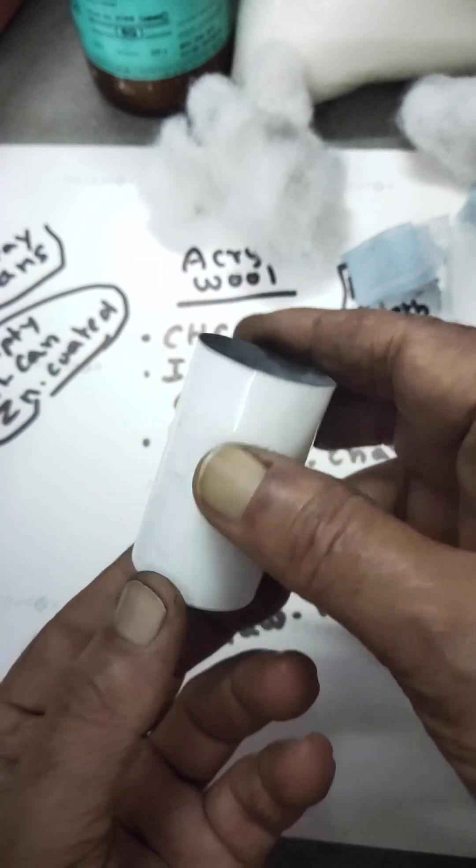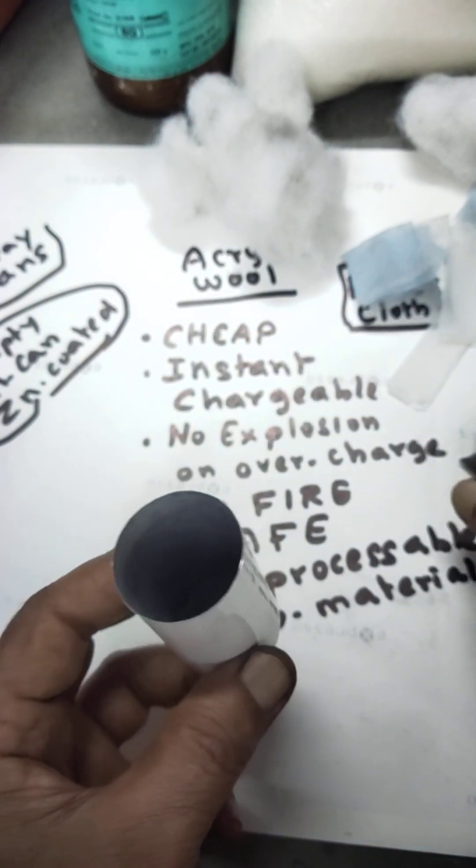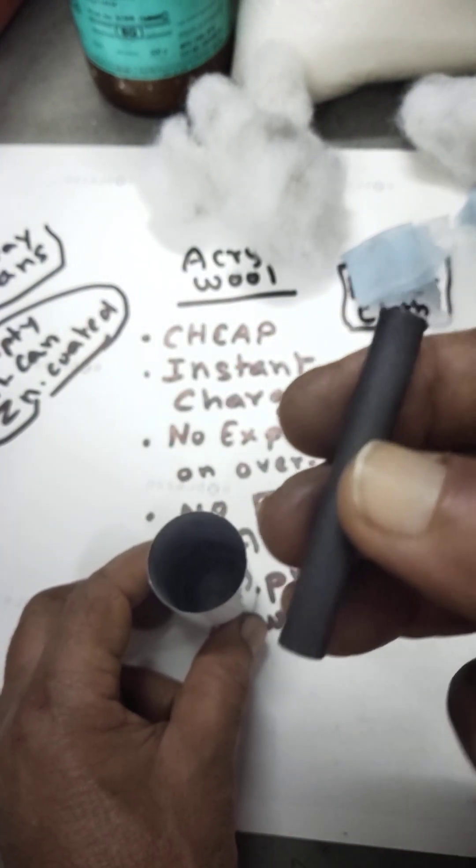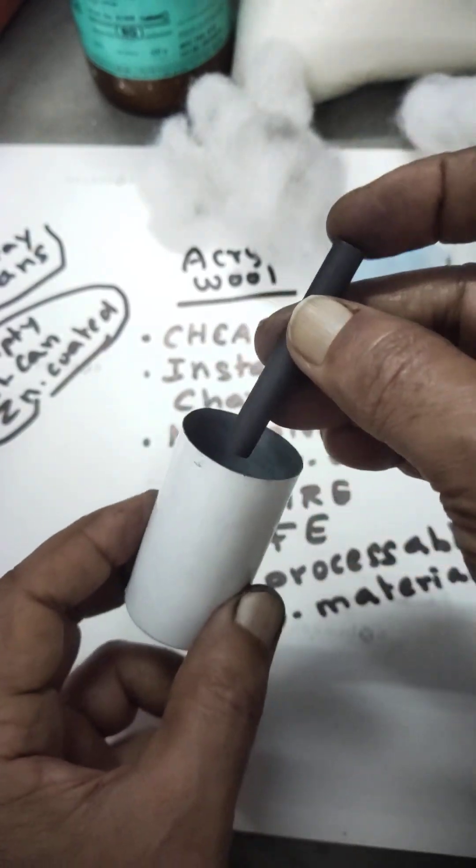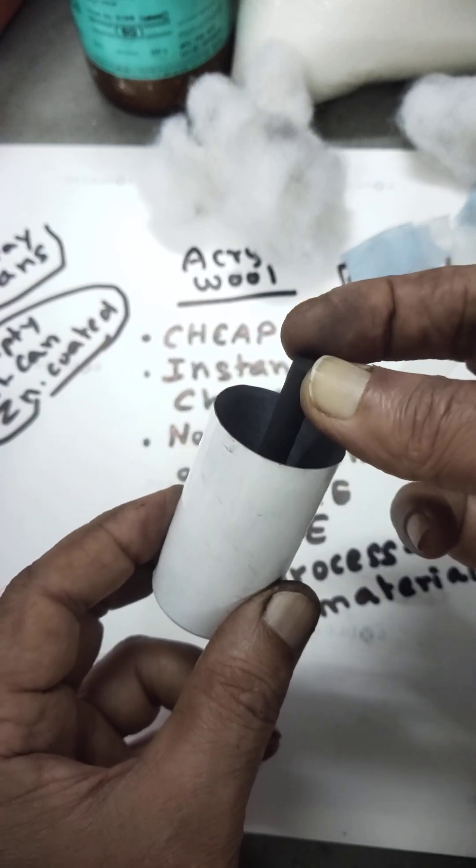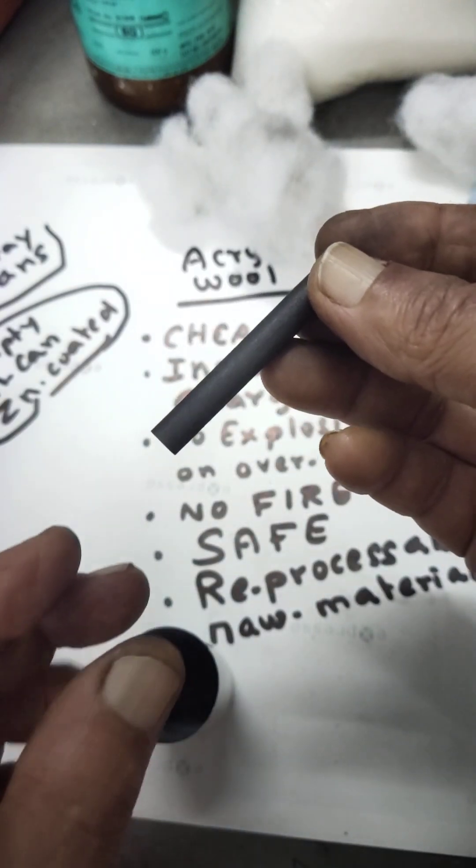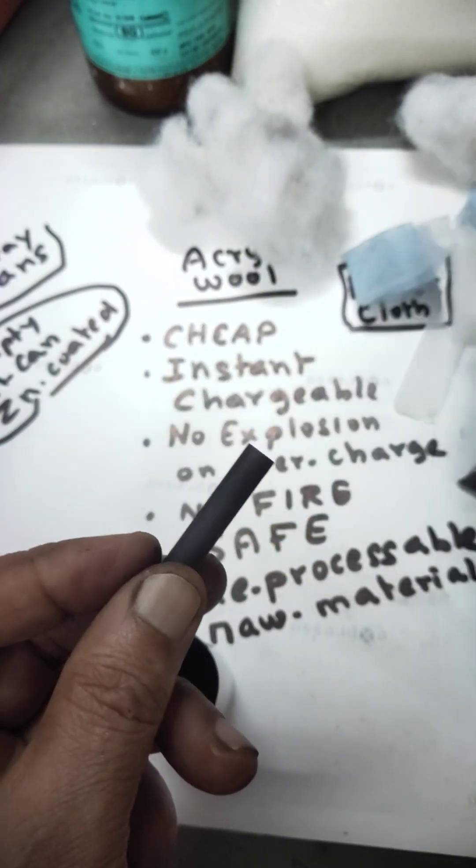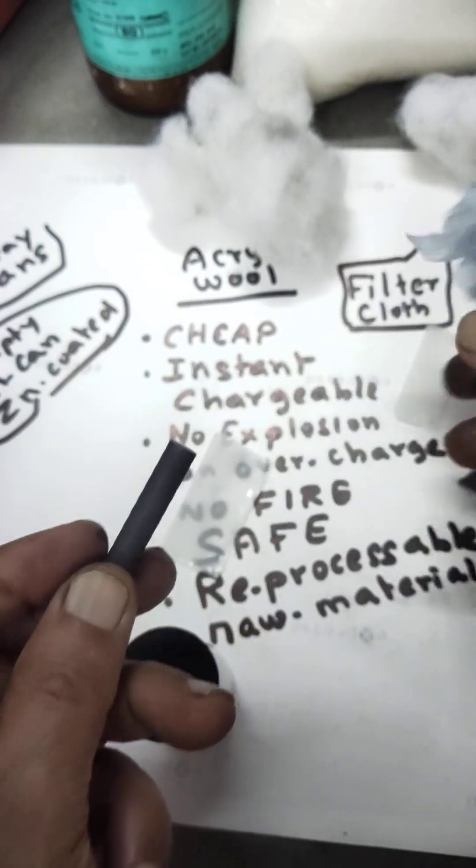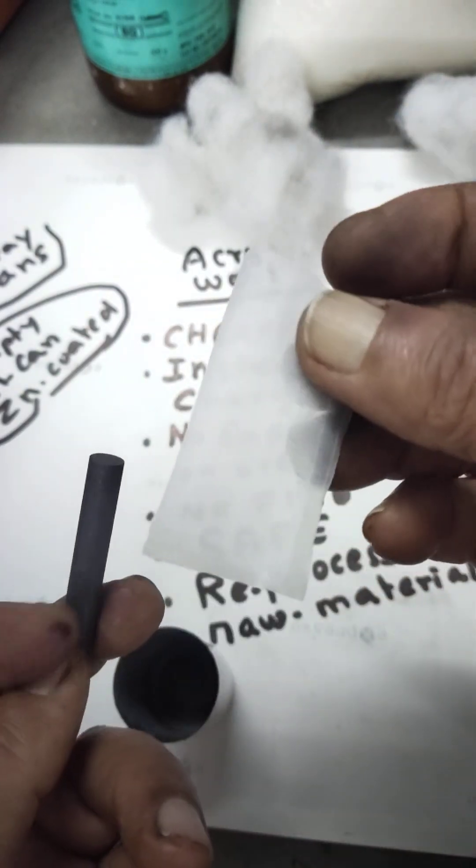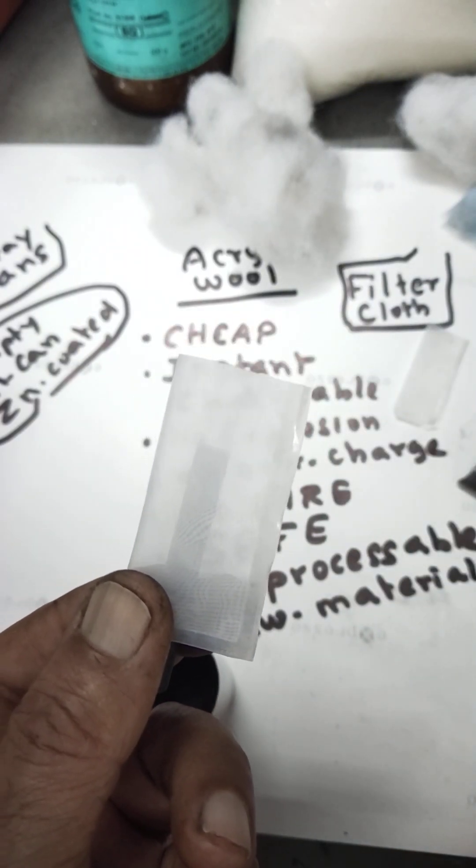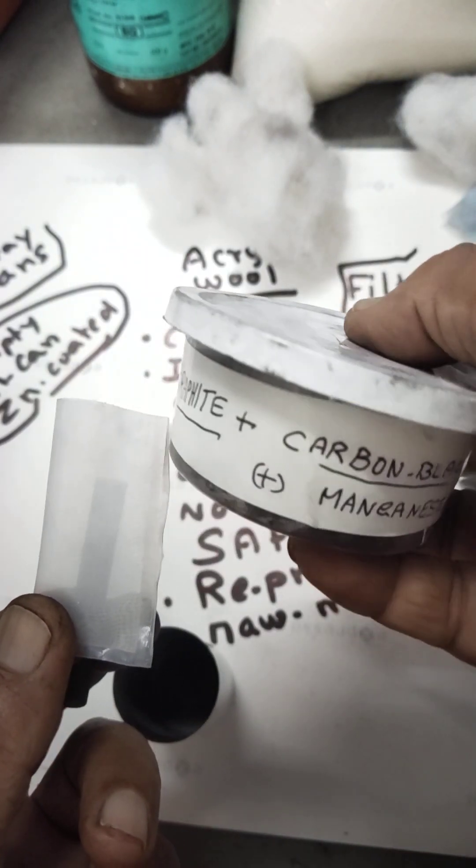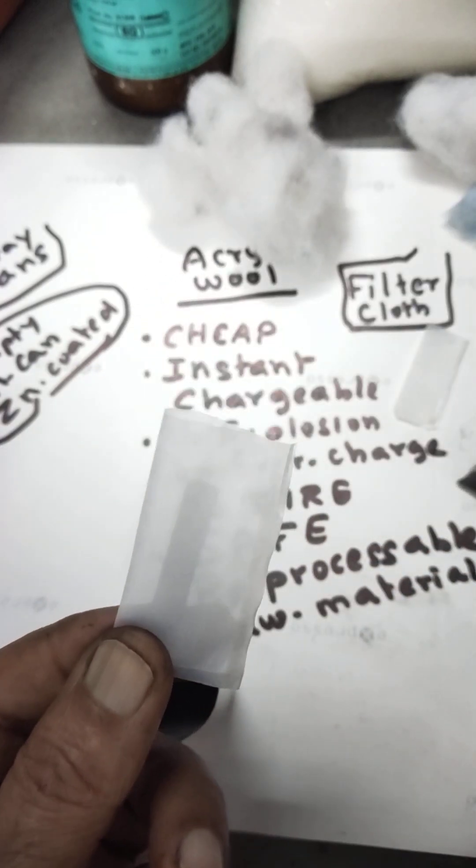The positive part will be the carbon rod which will act as positive. I'm going to keep carbon rods inside with a nylon filter cloth attached. I'm going to fill it with carbon black, graphite powder, and manganese oxide.